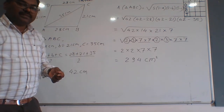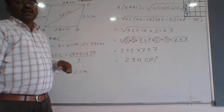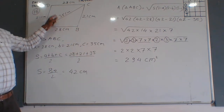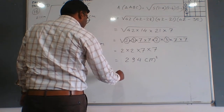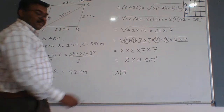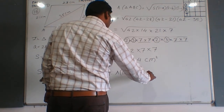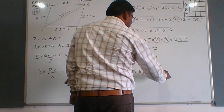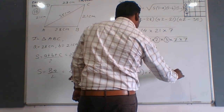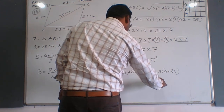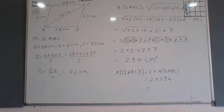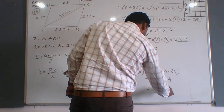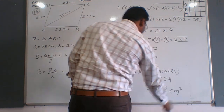Now the area of parallelogram ABCD equals 2 multiplied by the area of triangle ABC, because the two triangles are equal in area and contain the same lengths of sides. So area = 2 × 294 = 588 cm square. This is the area of the parallelogram ABCD.